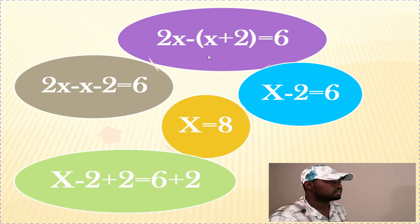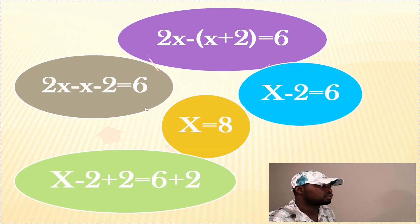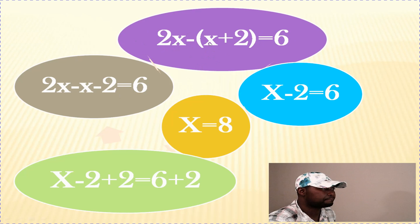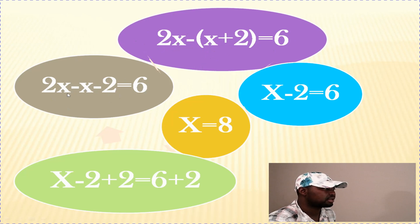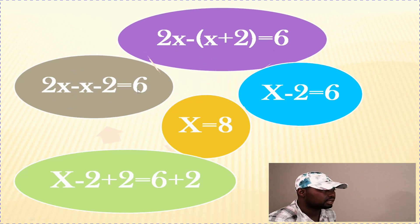Based on the mathematical law, we do whatever is in the brackets first. Minus multiplied by positive x is minus x. Minus times positive 2 is negative 2. Now we have 2x minus x minus 2 equals 6. What is 2x minus x? That gives us 1x. And negative 2 is still here, so x minus 2 equals 6.